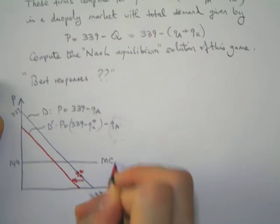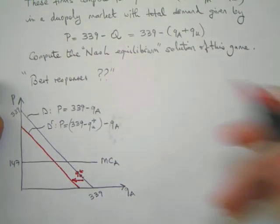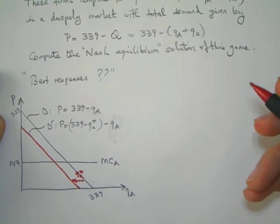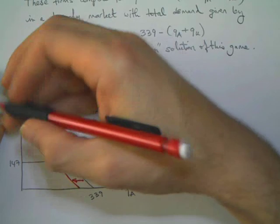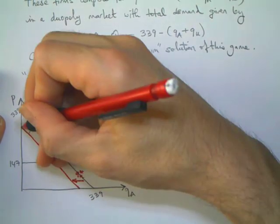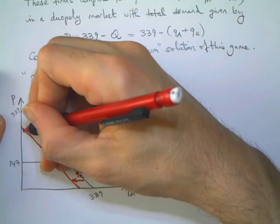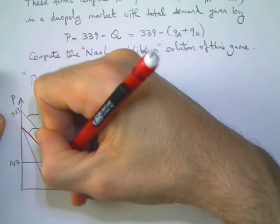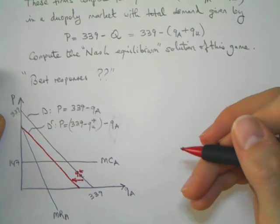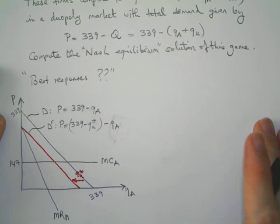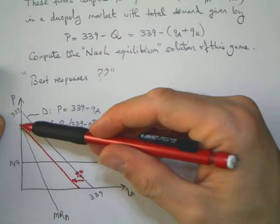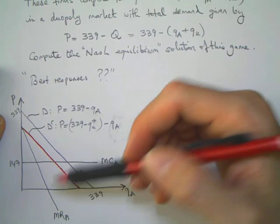Knowing that the marginal cost is the same, we have the marginal cost at 147. This is the marginal cost of American Airlines. Now it's possible to find the optimal decision of both companies. For this we will need to draw our marginal revenue. This is the marginal revenue of American Airlines.